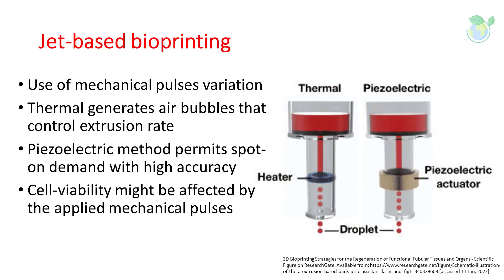Jet-based bioprinting uses mechanical pulses to manufacture small-sized bioink droplets. Two common methods are available: thermal and piezoelectric. Using an actuator to generate acoustic waves for the piezoelectric method, they are able to achieve spot size resolutions of around 50 to 70 microns. This technique is more commonly termed the drop-on-demand method. Alternatively, thermal inkjet technology generates small air bubbles by applying electrical heat within a heated printhead, where the air bubbles control the material extrusion rate from the print nozzle. Variation in the applied mechanical pulses can also influence cell viability within this inkjet printing process, thus careful optimization steps are unavoidable.